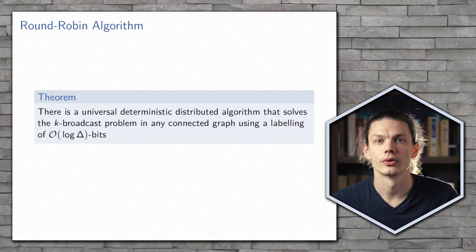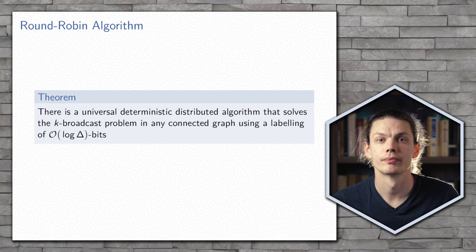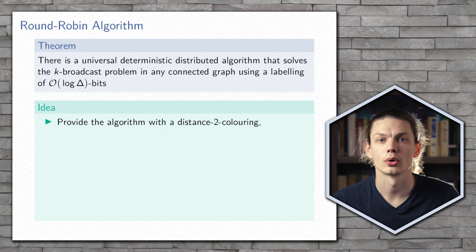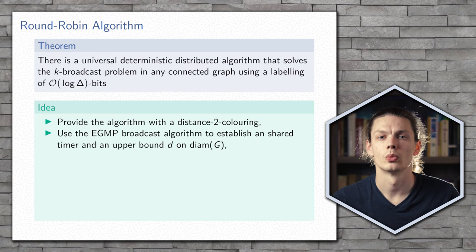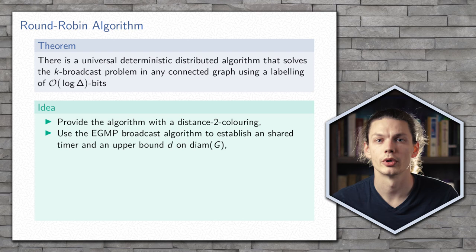The next algorithm we'll look at is a round robin algorithm that uses O(log δ) bit labels, where delta is the maximum degree of the graph. This algorithm works by assigning the processors a distance-2 coloring.